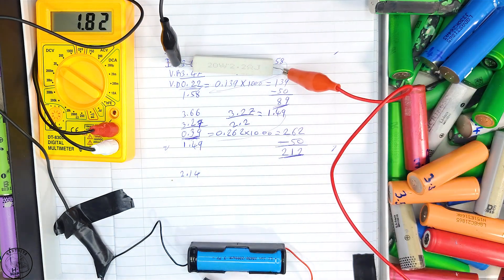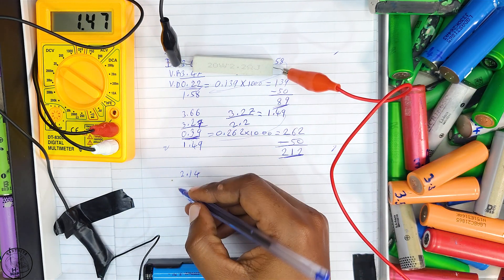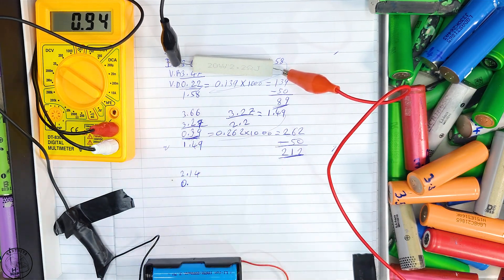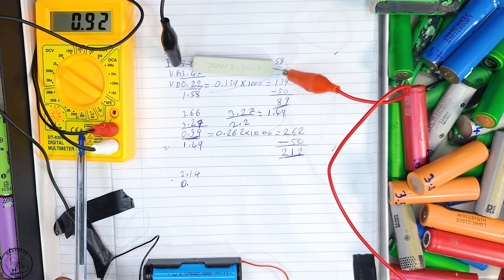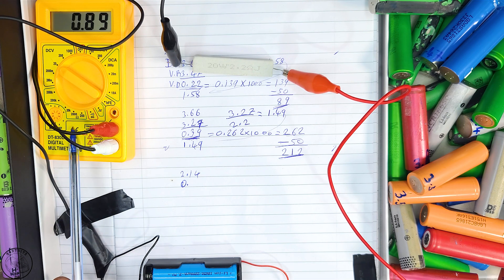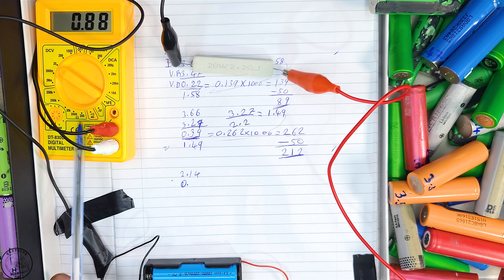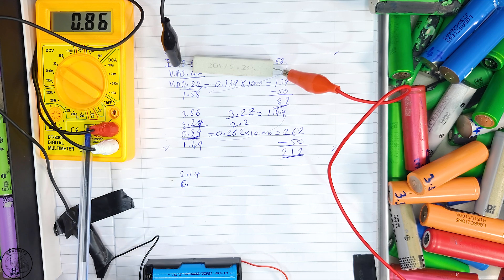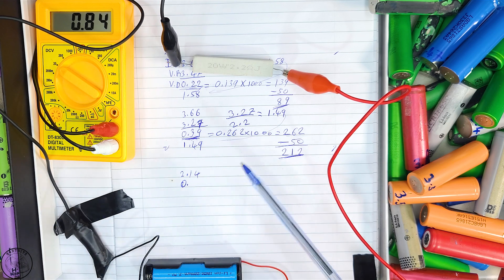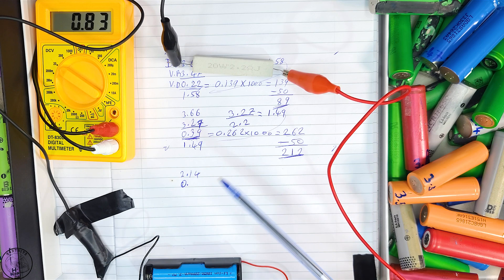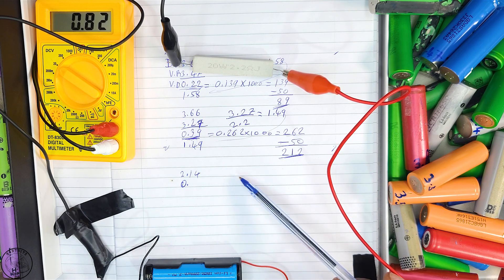Our main objective is to measure the internal resistance of each cell using a straightforward, cost-effective method. We'll identify cells with internal resistance greater than 100 milliohms as we want to exclude these from our selection.